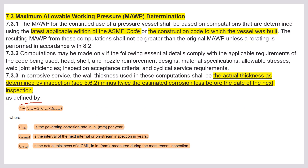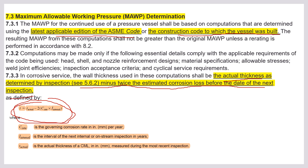Maximum Allowable Working Pressure (MAWP) determination is a question that usually comes as an open-book question. The MAWP for continued use of pressure vessels shall be based on computations determined using the latest applicable edition of the ASME code or the construction code under which the vessel was built. The actual thickness determined by inspection, minus twice the estimated corrosion loss before the date of the next inspection, is used. Here, t_actual is the actual CML thickness, I_internal is the interval to the next on-stream inspection, and C_rate is the governing corrosion rate — used to find the minimum required wall thickness.